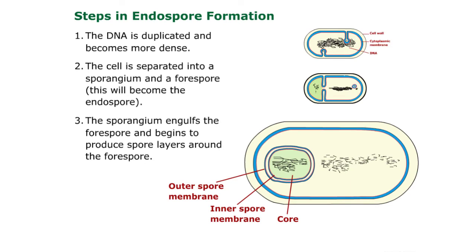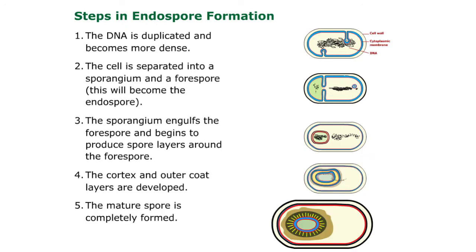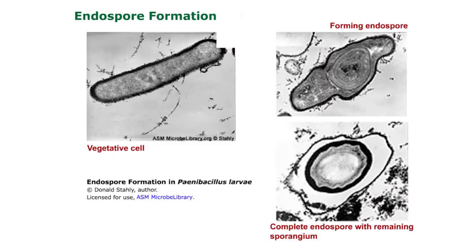Number three, the sporangium engulfs the forespore and begins to produce spore layers around the forespore. Number four, the cortex and outer coat layers are developed. And number five, the mature spore is completely formed. Here we see a vegetative cell forming an endospore and a complete endospore with remaining sporangium.